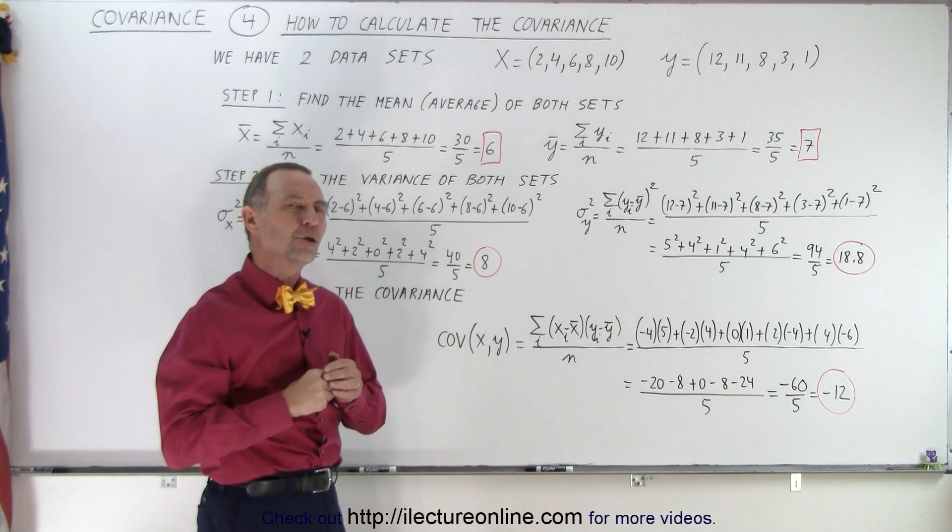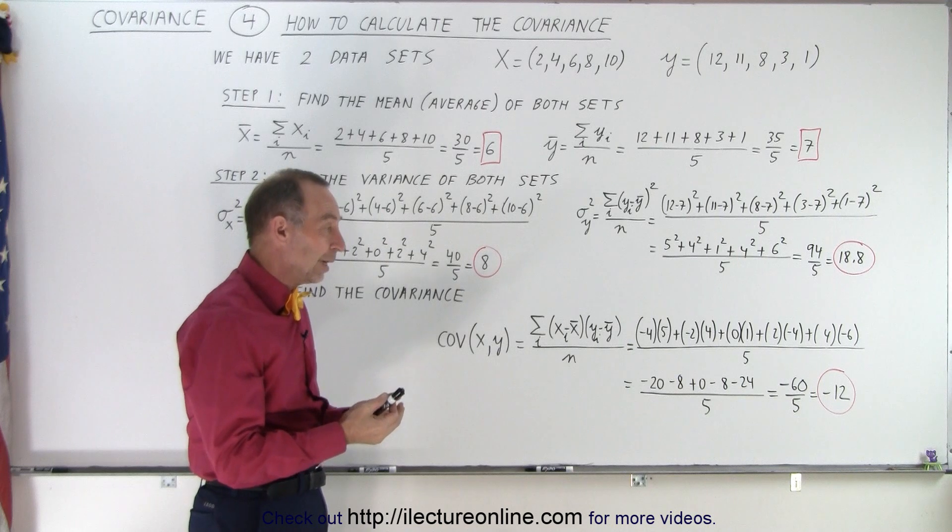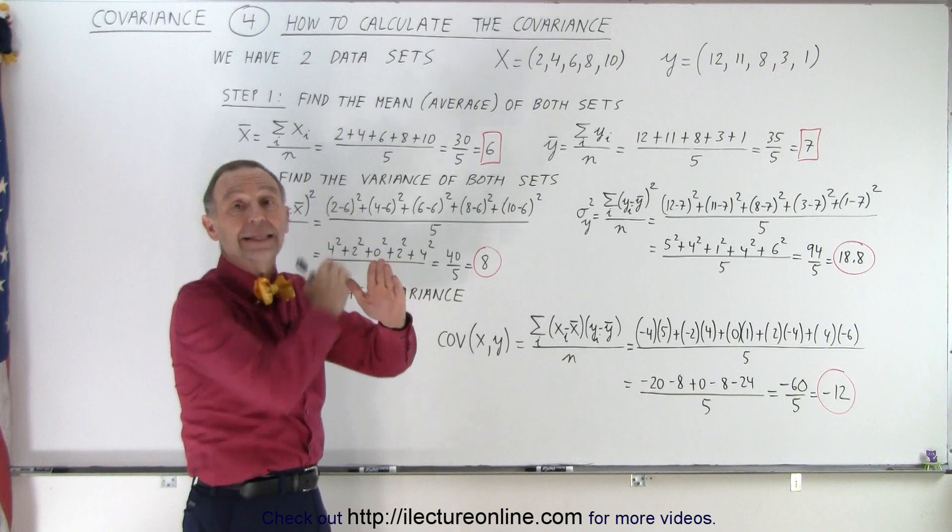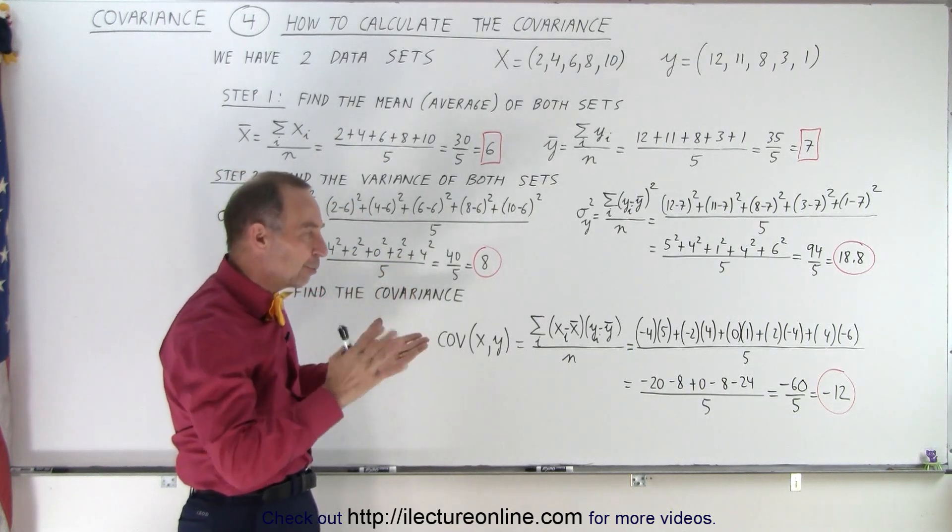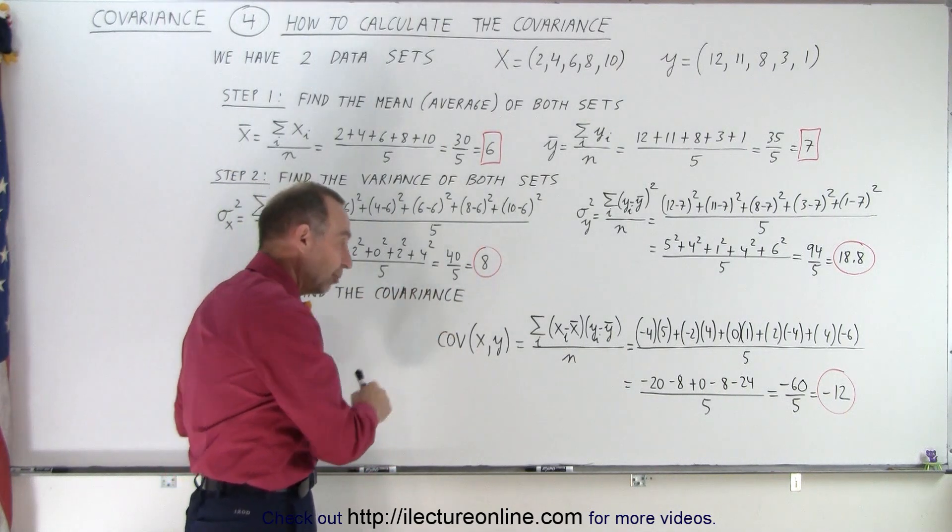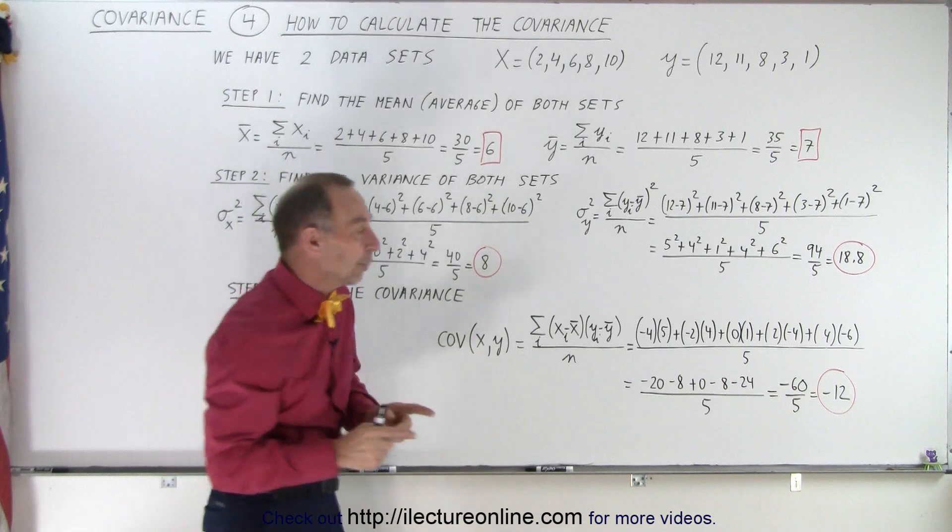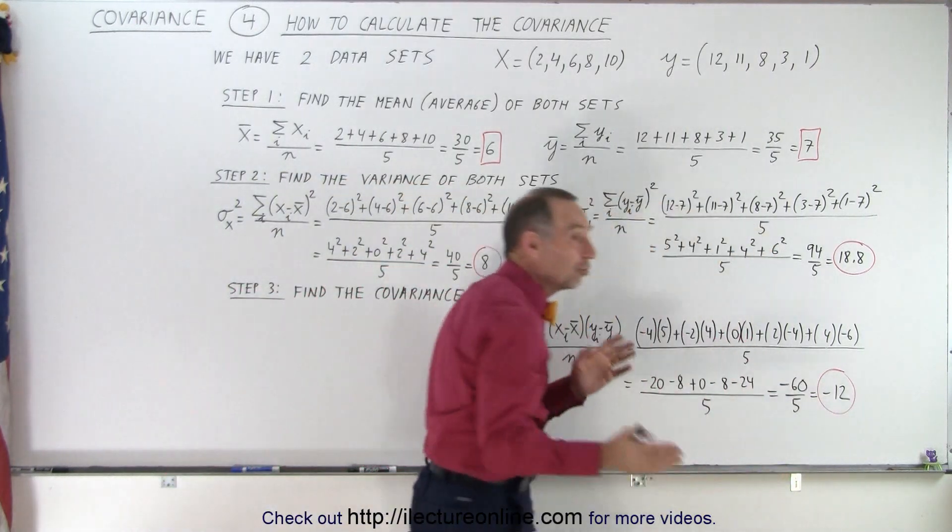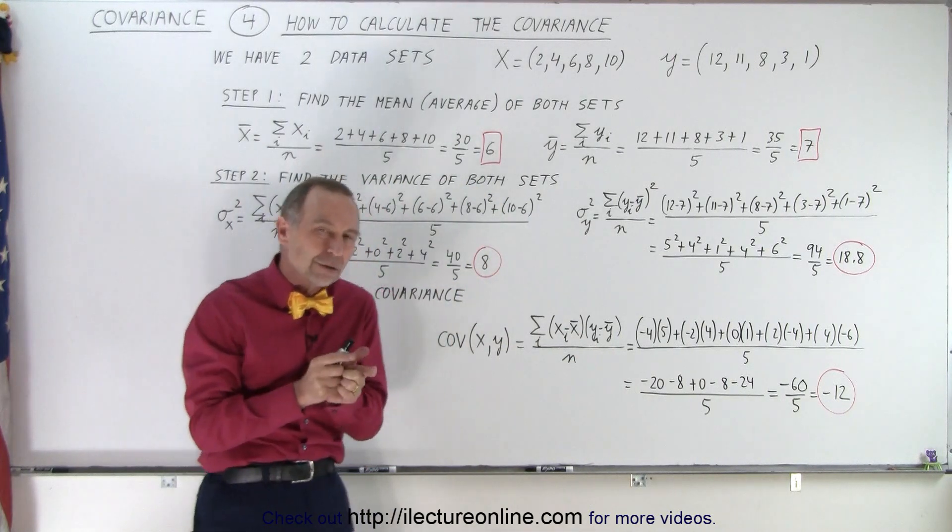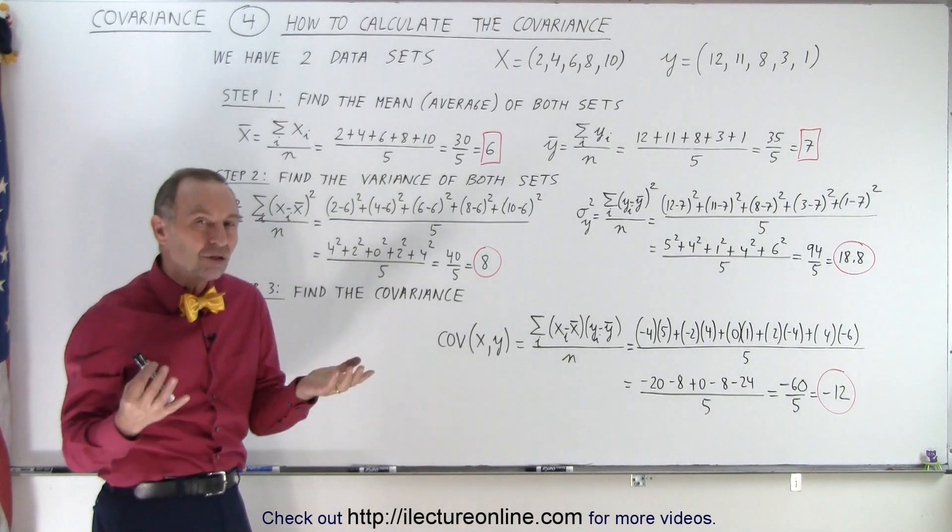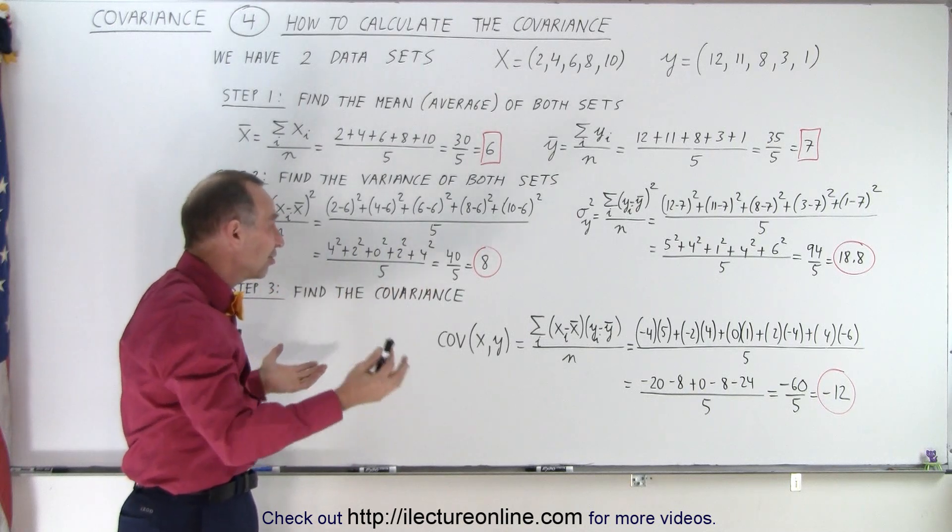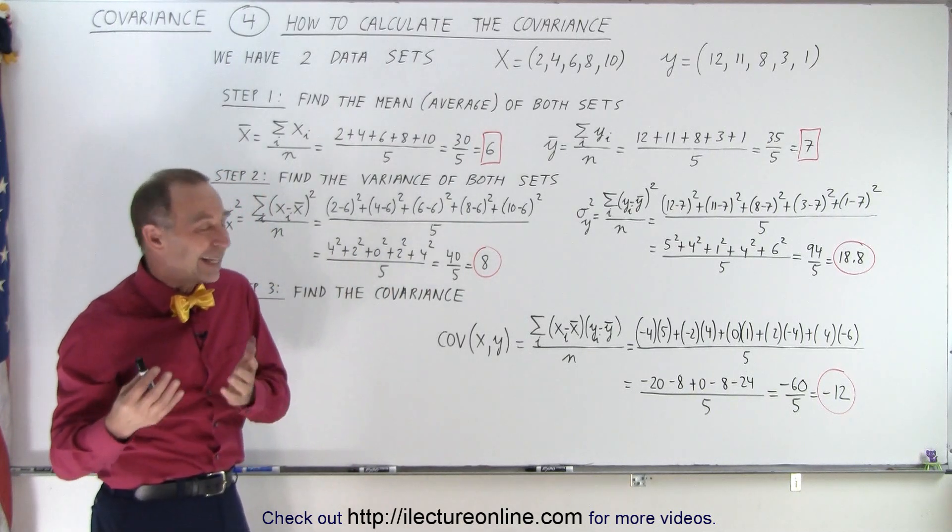So what does that mean, the covariance of negative 12? Well, first of all, since it's negative, we know that we have an increasing set and a decreasing set. So there's a big difference between how the two sets correlate to one another. Now, if we actually were to find a correlation between the two datasets, we would end up with a number between negative one and one, and we would see how strongly they correlate to one another. By just calculating the covariance, well, we have an indication, but the number 12 depends a lot upon the size of the numbers, the average, the variances. So it's not that easy.